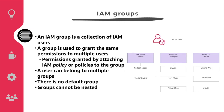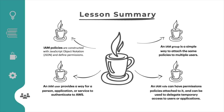An IAM group is a collection of IAM users. Groups provide a convenient way to specify permissions for a collection of users, making it easier to manage permissions. Key takeaways: IAM policies are constructed using JSON notation and define permissions. IAM policies can be attached to any IAM entity — users, groups, and roles. An IAM user provides authentication for a person, application, or service. A group is a simple way to attach the same policies to multiple users. A role has permission policies attached and can be used to delegate temporary access to users or applications.